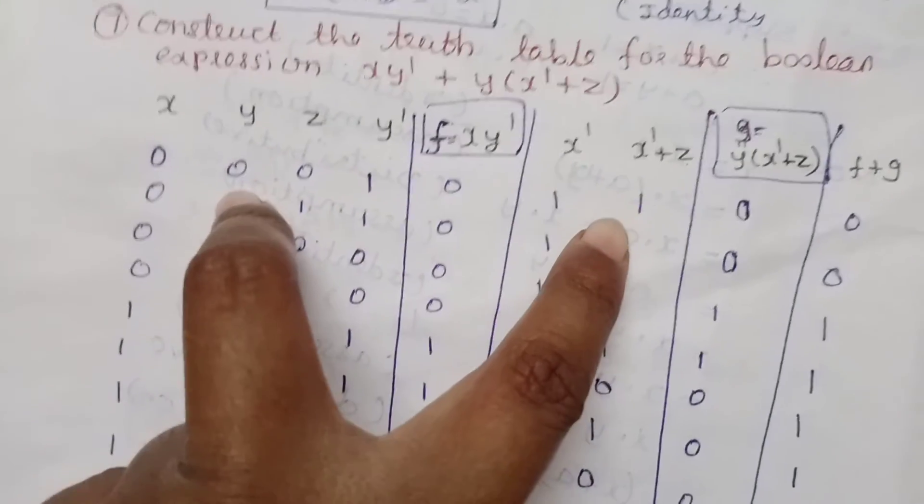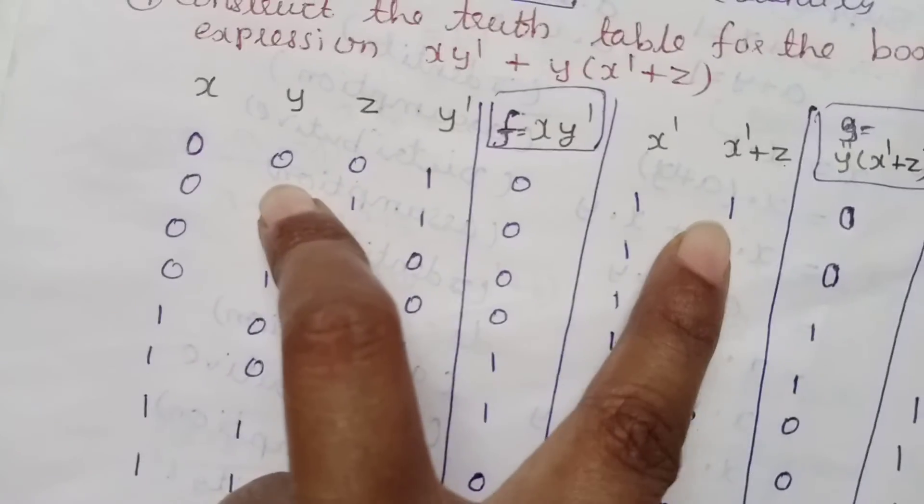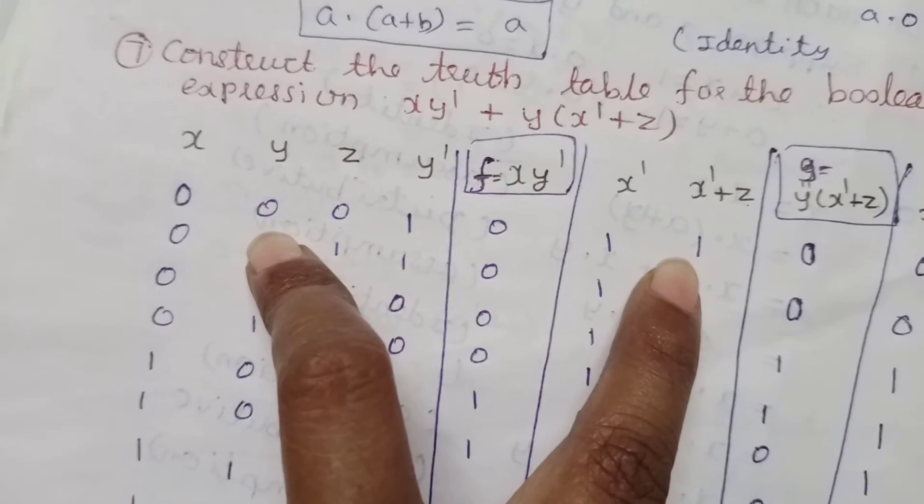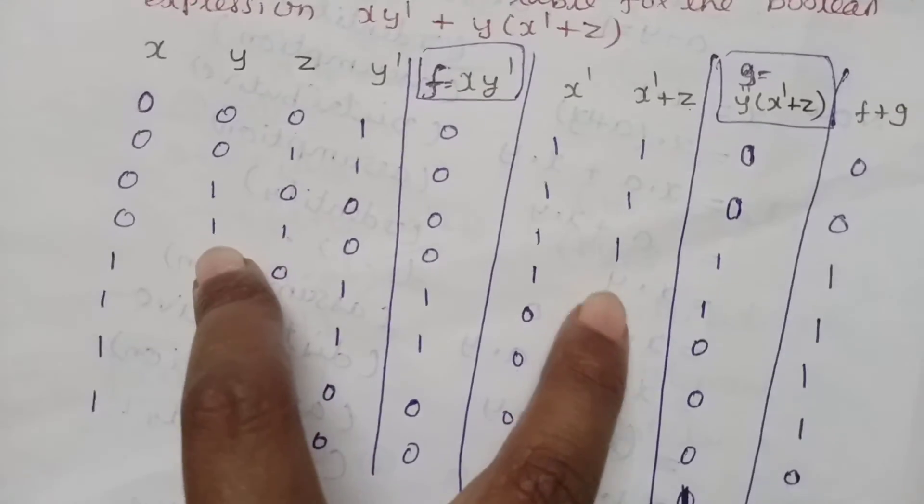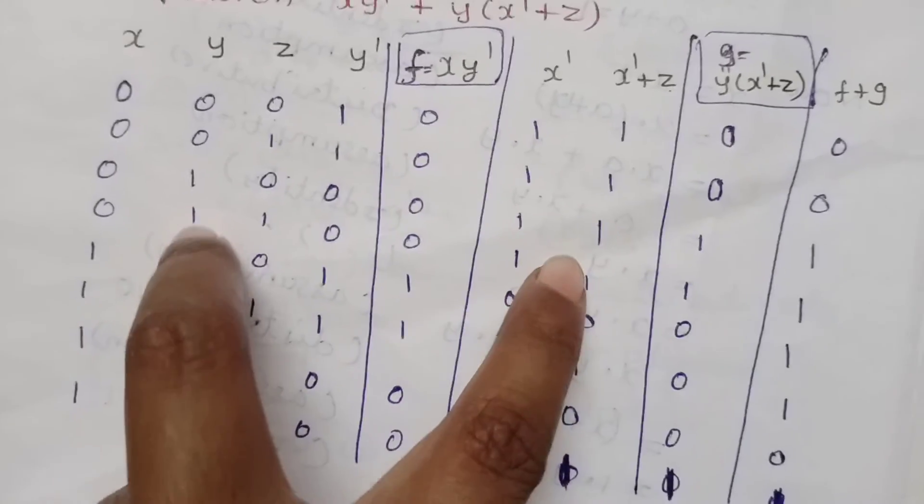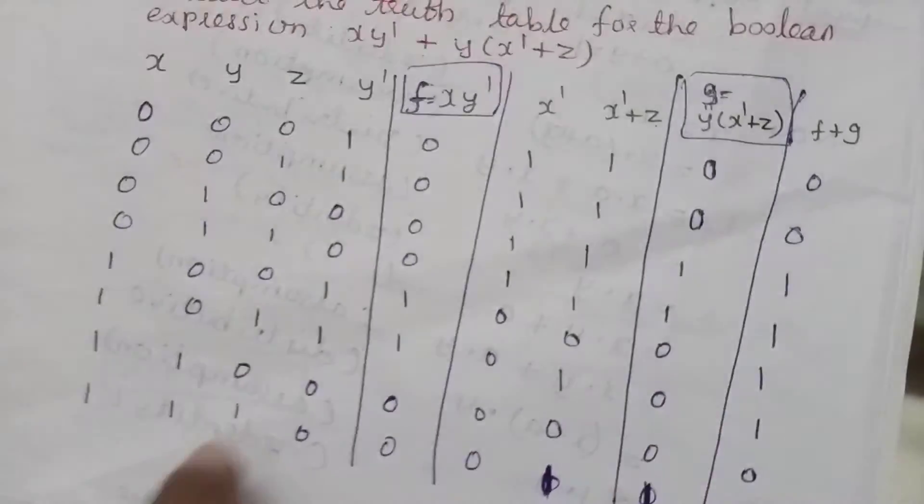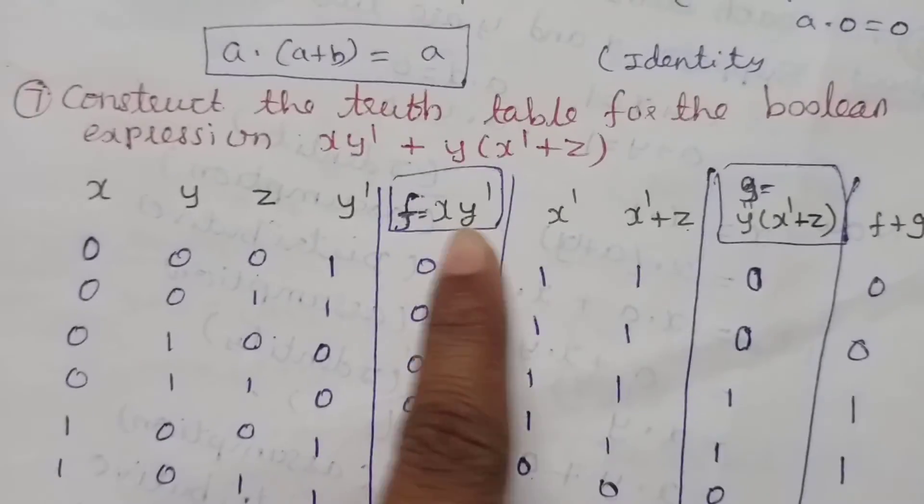This is y and this is x' + z. If the product is 1, it is 1. This is 0. If you have 2 elements, it is 1. This is 1, this is 1. If you have 1, this is 1, this is 0. Now this is f and this is g.